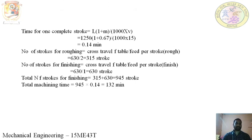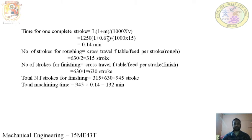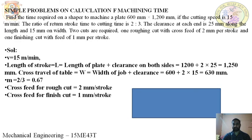Looking at the solution: time for one complete stroke is given by L multiplied by (1 plus M) divided by (1000 into V), where V is the cutting speed and M is the cutting ratio. L is calculated as 1250 mm, M is 0.67, and V is 15 meters per minute. So time for one complete stroke is 0.14 minutes.